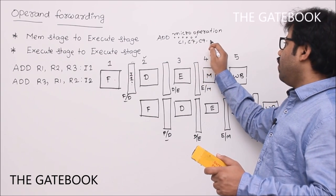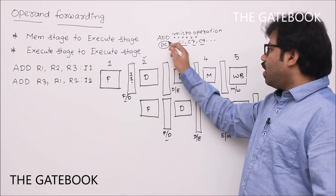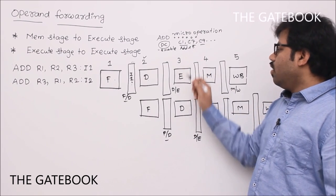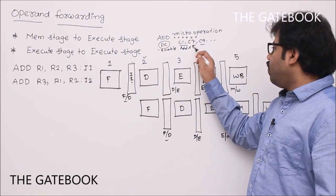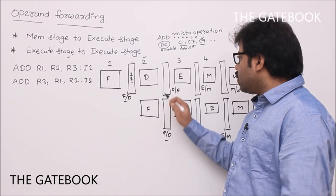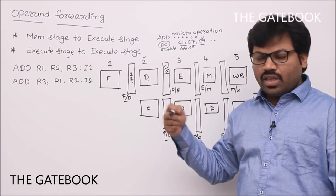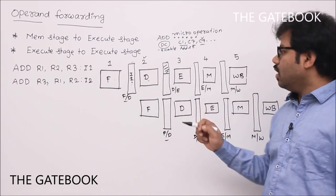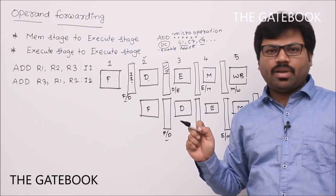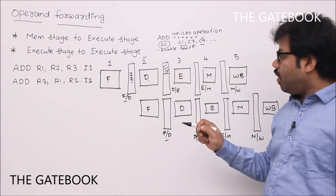Control signals like program counter enable, ALU adder enable (say signal C9), and so on are all determined. These control signals are sent through the decode-execute buffer. They decide which functional unit works — adder, subtractor, multiplier — whether memory is accessed, and whether the result is stored back. These control signals are critical.